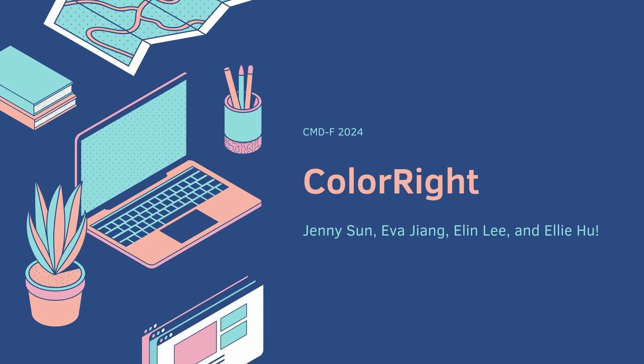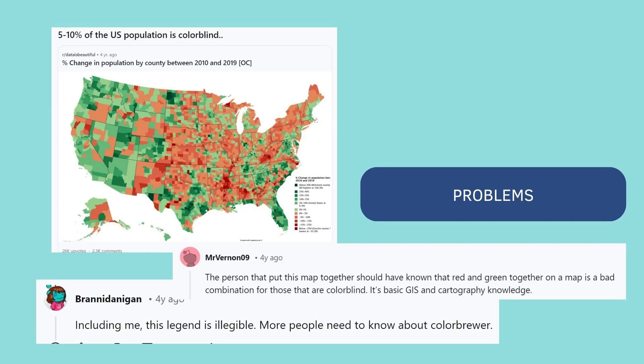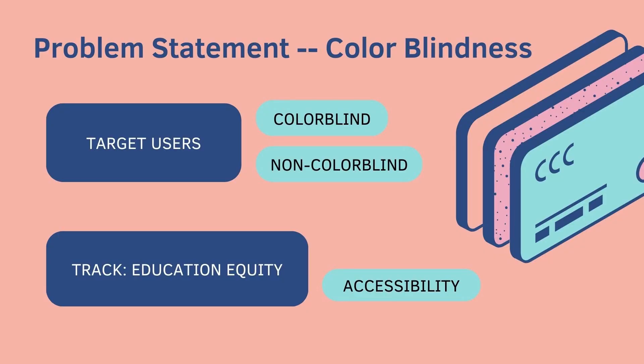Welcome to ColorRight, a website that aims to support people with colorblindness. Colorblindness is common amongst people around the world. However, there are still quite a few issues that they face, especially in education, such as the unfriendly color scheme of charts. Therefore, our project aims to tackle this issue and falls under the education equity track.